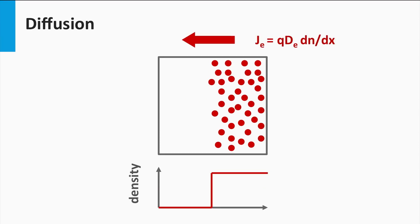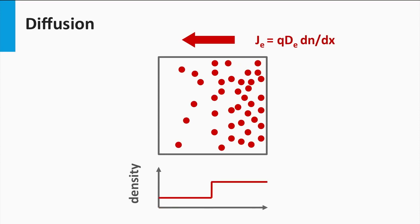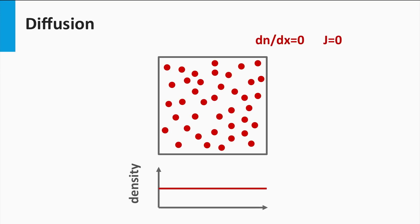The net movement of particles induced by density gradients is called diffusion, and it can be described by Fick's law of diffusion. J_e is the electron current density, expressed in current per area. Q is the elementary charge, D is the diffusion coefficient of the electrons, and dn/dx represents the density gradient in the x direction. The diffusion of electrons results in a net movement of electrons to the location with lower electron densities, and diffusion will be present as long as there is a density gradient.